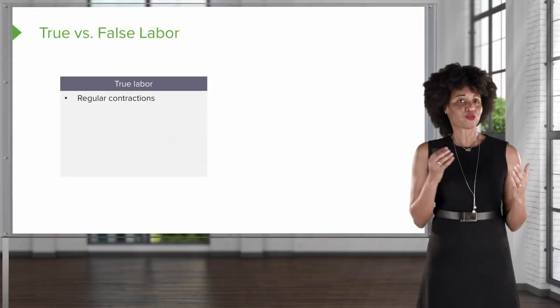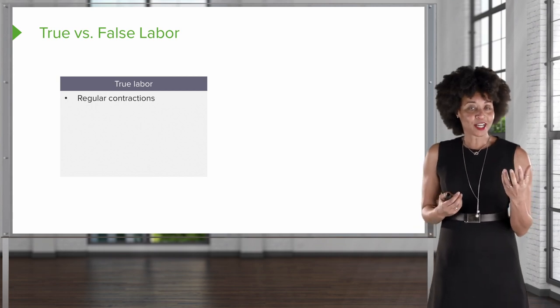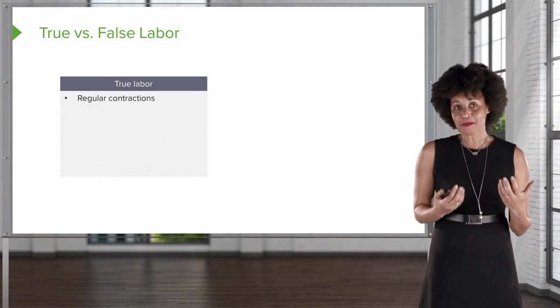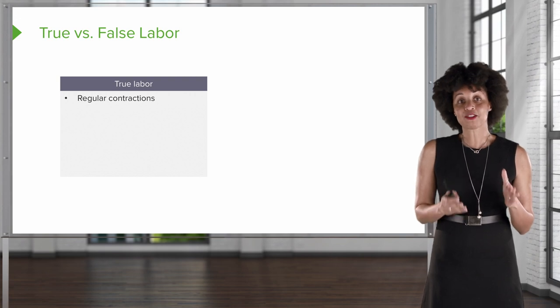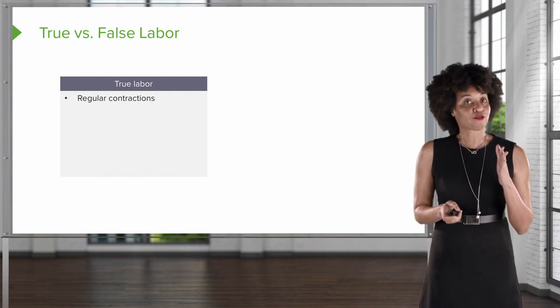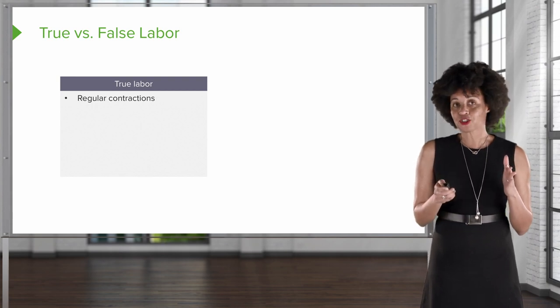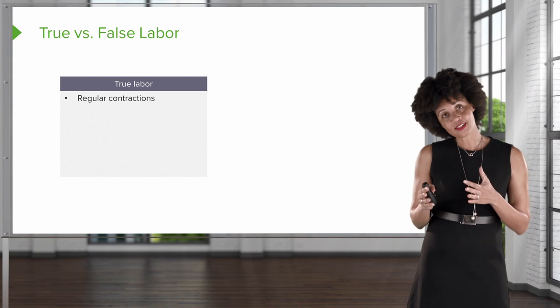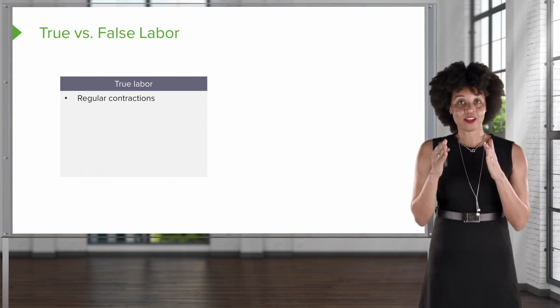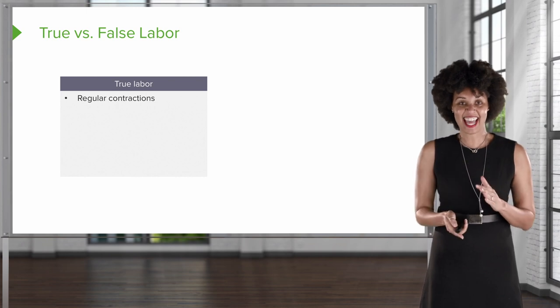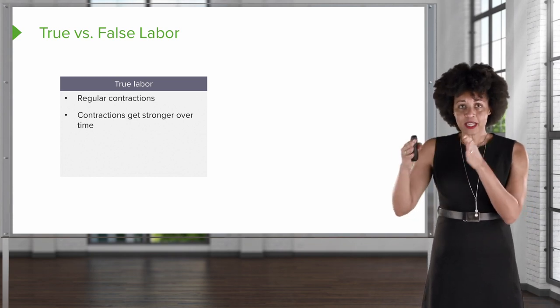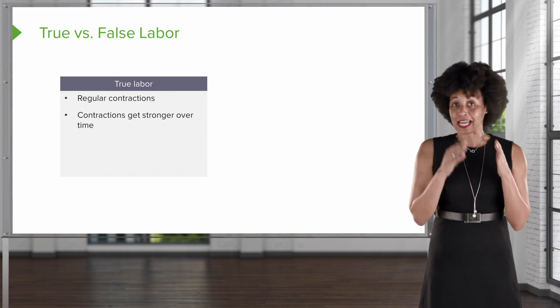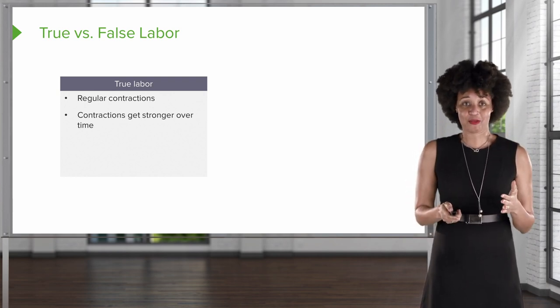So those are four triggers. The next thing to think about is recognizing true versus false labor. How can the nurse recognize those signs and symptoms? If someone is really in labor, they may have regular contractions — not varying between three, five, and ten minutes, but coming every three or every five minutes consistently. Also, over time the contractions get stronger and more uncomfortable.